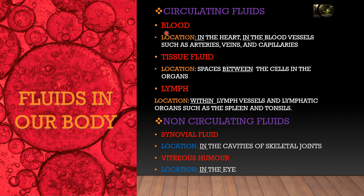Blood can be found in the heart and in blood vessels — arteries, veins, and capillaries. Tissue fluid is found between the cells, between the tissues, and in the organs. Lymph is found within lymph vessels and lymphatic organs. Some examples of lymphatic organs are the spleen and tonsils.